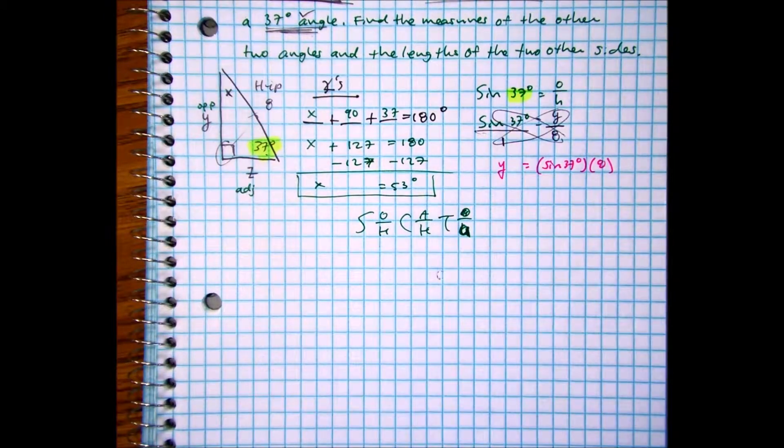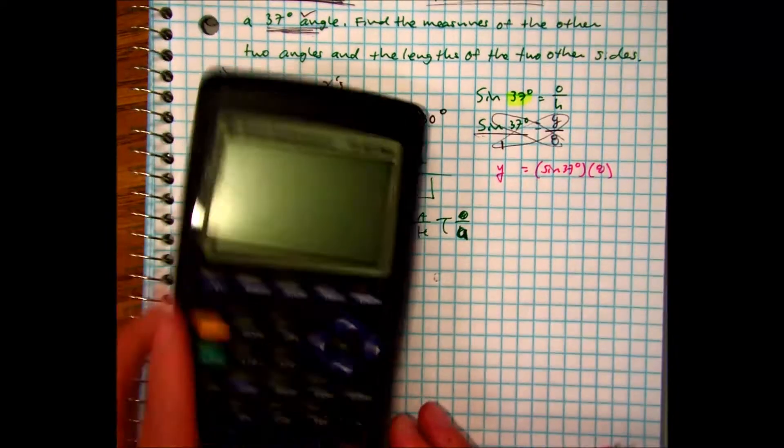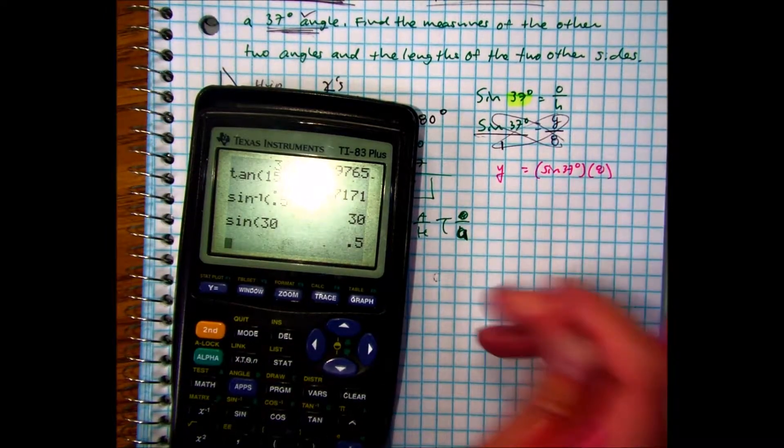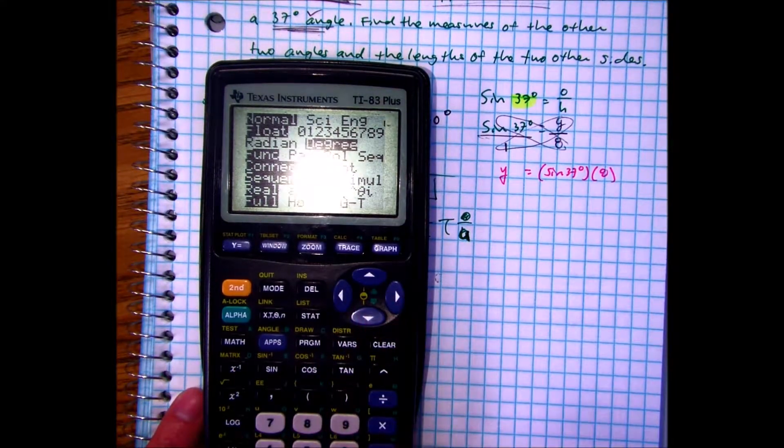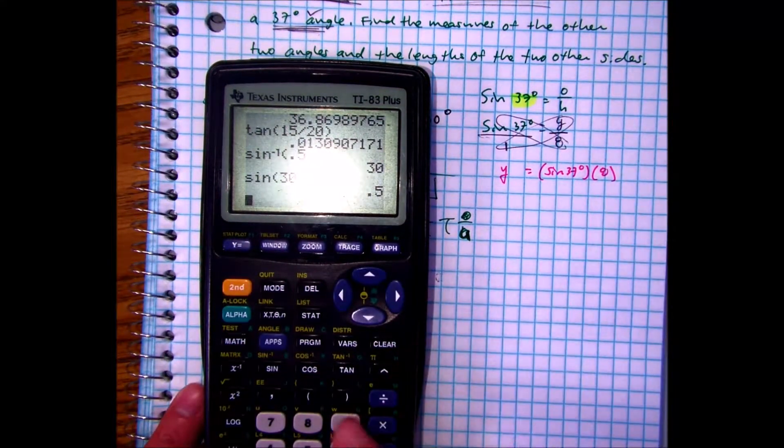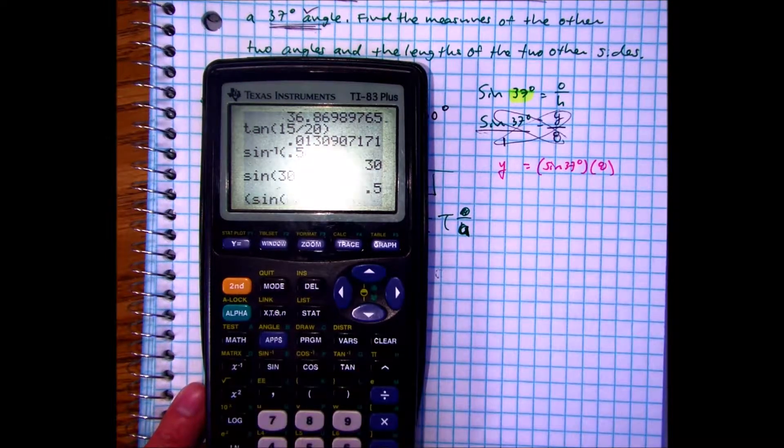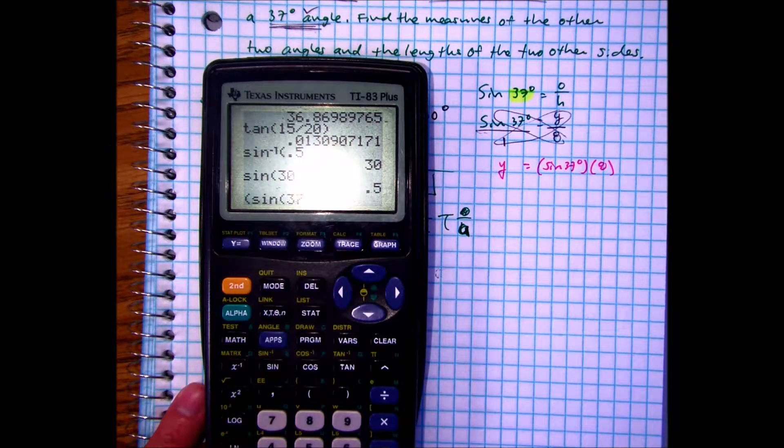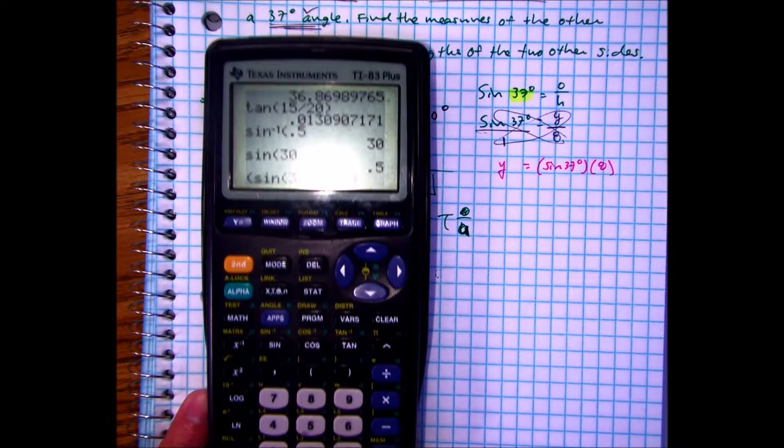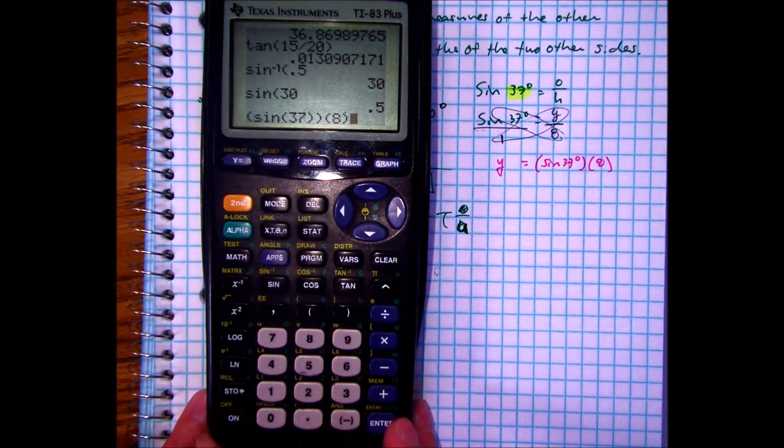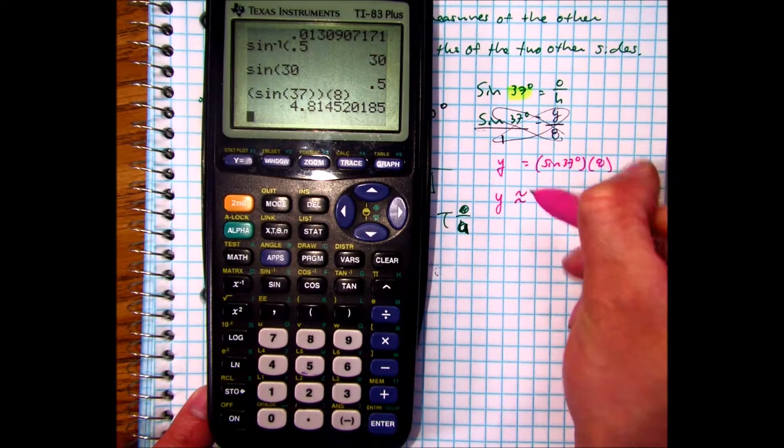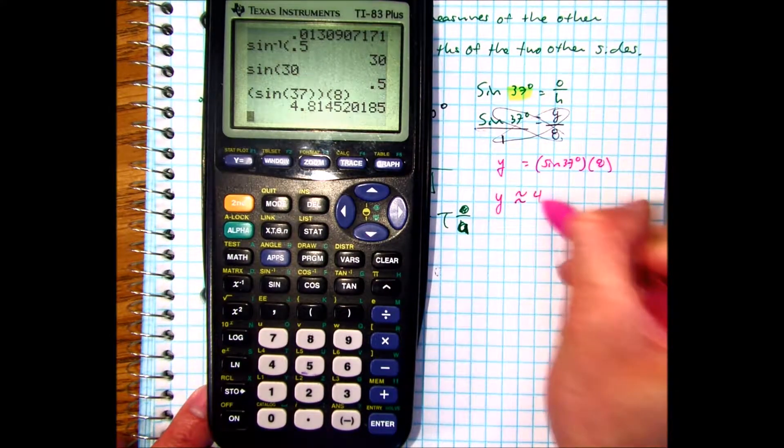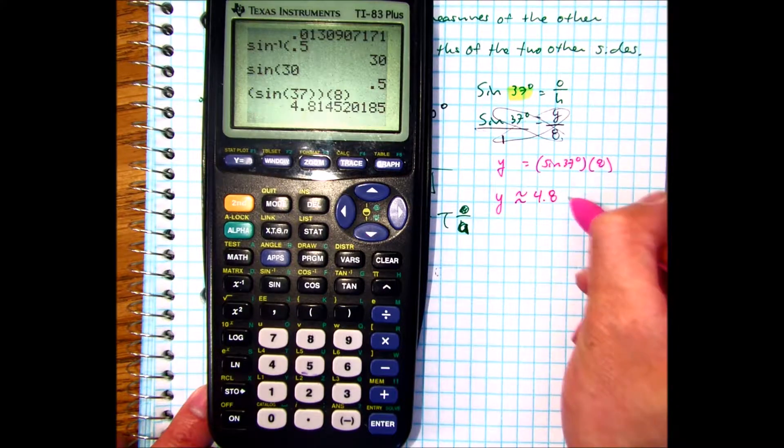I'm going to get y equals sine of 37 times 8. Here's my calculator-ready equation. I have degrees. Make sure I'm on degree mode. Check. Sine of 37 using extra parentheses, and I'm going to multiply that by 8, and I'm going to press enter.